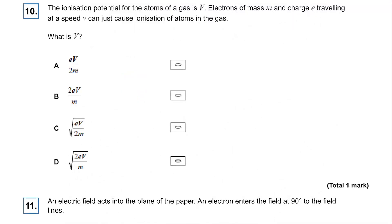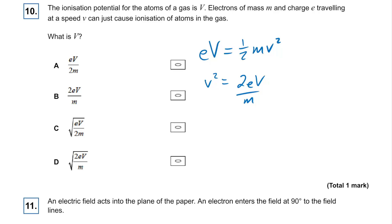Question ten: ionisation potential is V, electrons of mass M and charge e. Electrons accelerated through a potential: eV equals kinetic energy. Rearranging, V² equals 2eV over M. Square rooting, we end up with answer D — essentially asking for the speed of charged particles accelerated through a potential difference V.